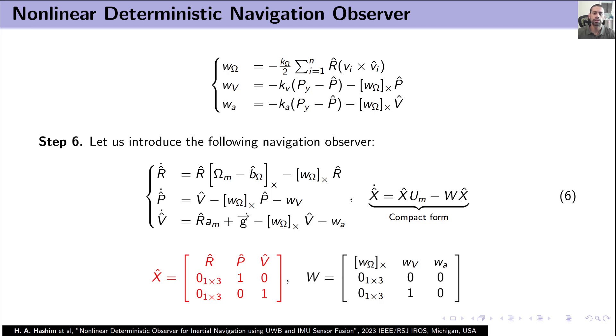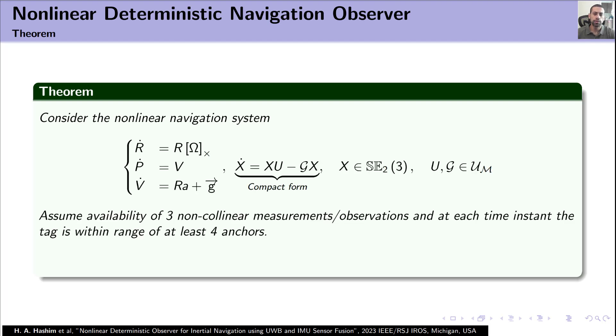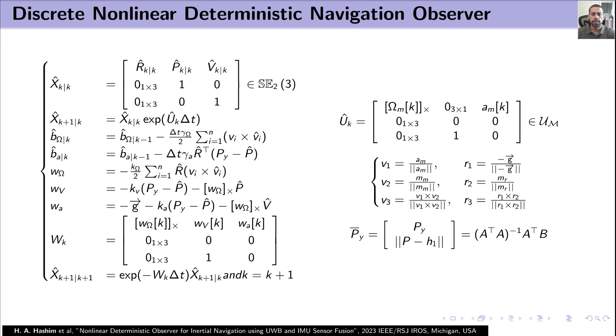To prove the observer convergence, consider the following navigation kinematics, and let us assume the availability of three non-collinear measurements of the IMU as well as the observations, and at each time instant the tag or the UAV equipped with a tag is always within a range of at least four anchors. This way all closed loop signals are exponentially stable from almost any initial condition. For complete proof, please refer to our paper. This slide illustrates the discrete implementation of the proposed navigation observer.